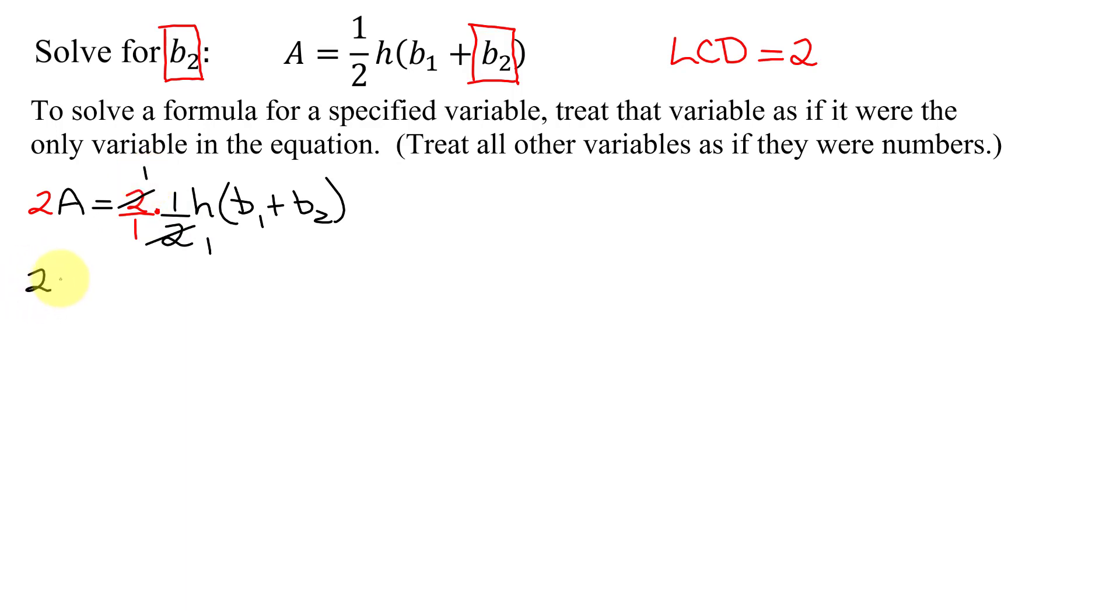So I get 2A equals 1 times 1 times h, which is h over 1 times 1, which is 1. h over 1 is h times the quantity b1 plus b2. So now I've got rid of my fractions.